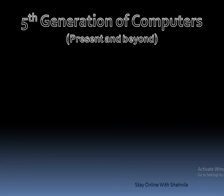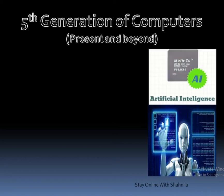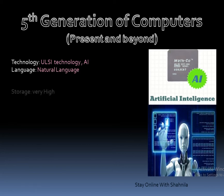Fifth generation computers are called 'present and beyond' or the future generation — present because we are using them today, and beyond because research is still ongoing. Robots are examples of fifth generation computers. ULSI (Ultra Large Scale Integration) technology is used. The main feature of fifth generation computers is AI — Artificial Intelligence.